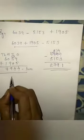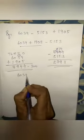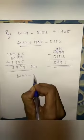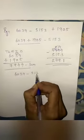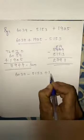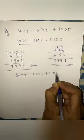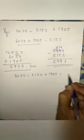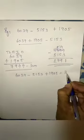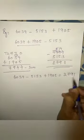We arrange it in this way: 6039 minus 5153 plus 1905 is equal to 2791.